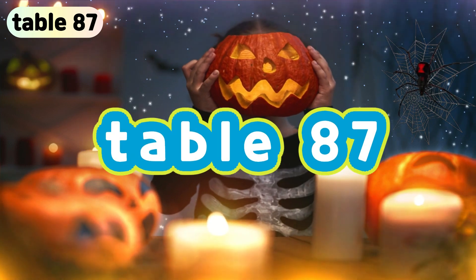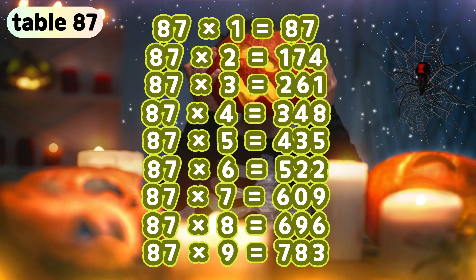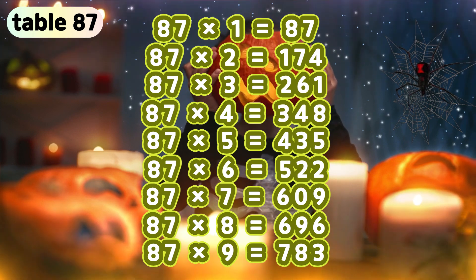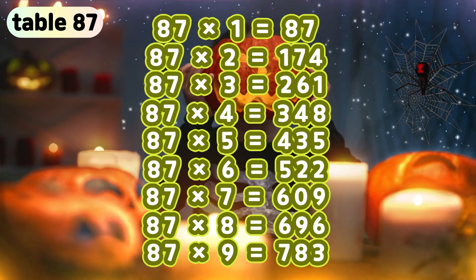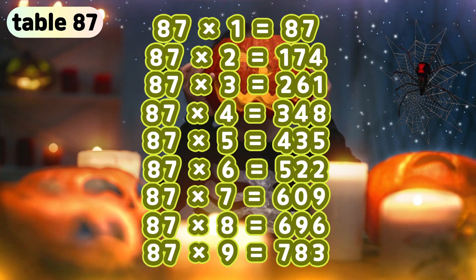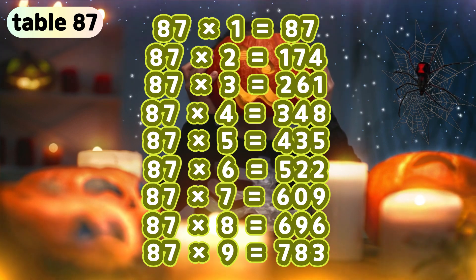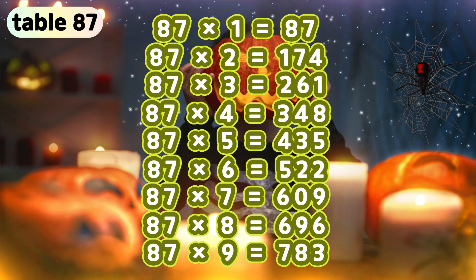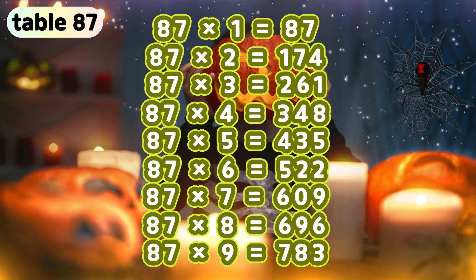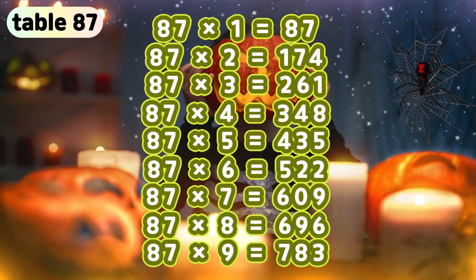Table 87. 87 times 1 is 87. 87 times 2 is 174. 87 times 3 is 261. 87 times 4 is 348. 87 times 5 is 435. 87 times 6 is 522. 87 times 7 is 609. 87 times 8 is 696. 87 times 9 is 783.